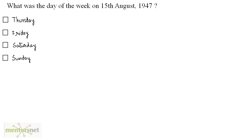What was the day of the week on 15th of August 1947? First we'll have to calculate the number of odd days till 15th August 1947, and that can be done by calculating the number of odd days till 1946 years and then adding the rest of the days of the months.